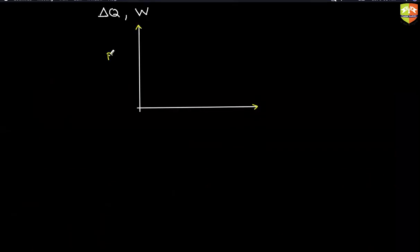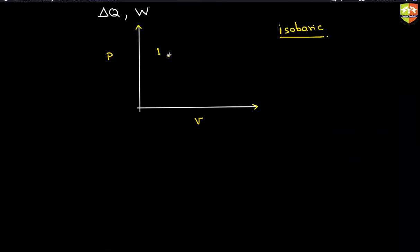First, write down the isobaric process and let's study them one by one. Let's say this is pressure and this is volume. Suppose the process is isobaric — how will the path look? Let's say point number one is the initial point. The final point will be parallel to the x-axis. Point one to point two — this is the isobaric process as it looks in a P-V plot.